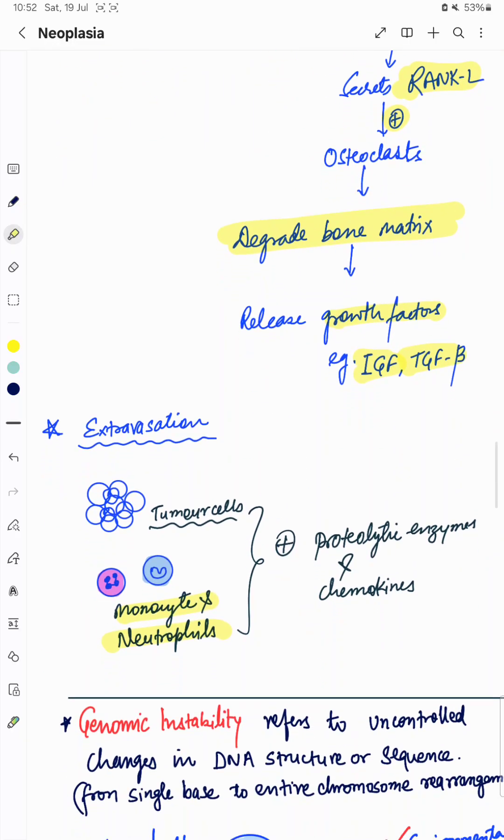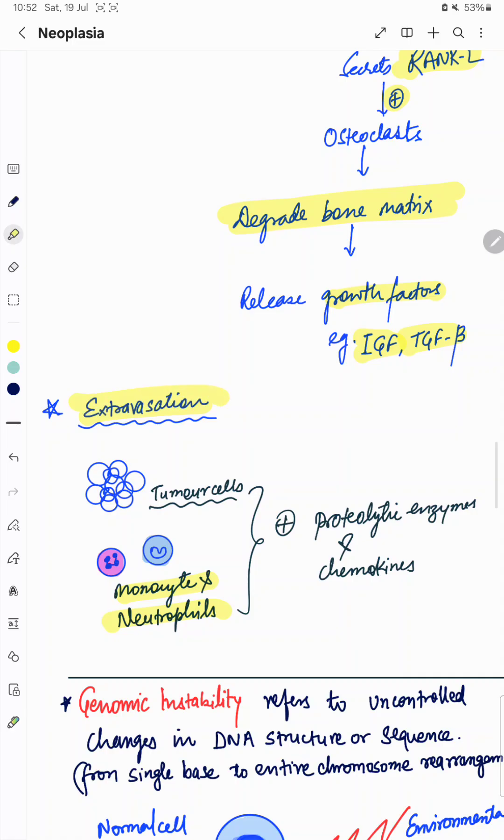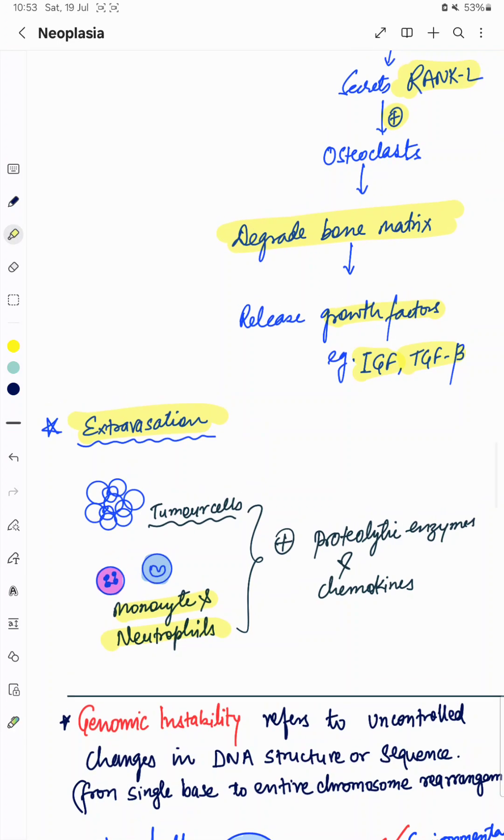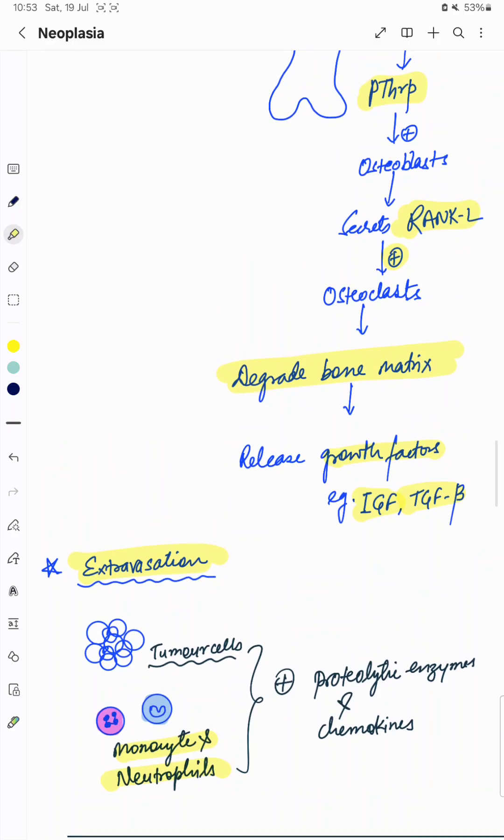How does this extravasation occur? Tumor cells along with monocytes and neutrophils secrete some proteolytic enzymes and chemokines. They help them to extravasate from the vascular channel to the desired or distant organ where they colonize. This is metastasis and their steps.